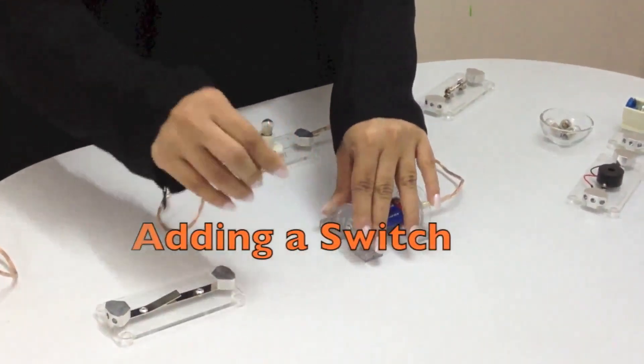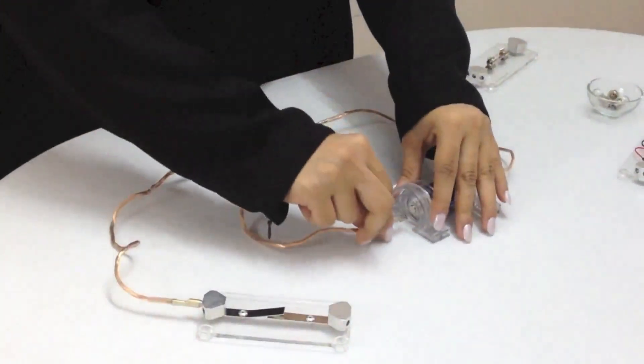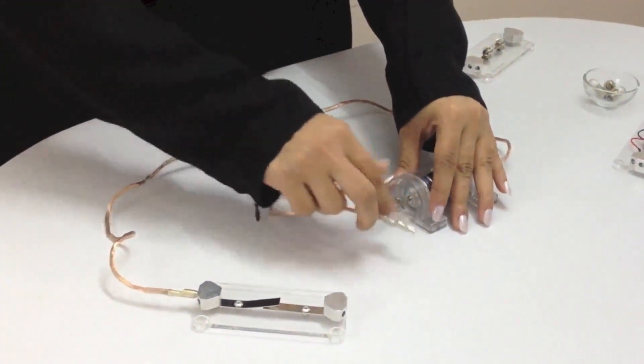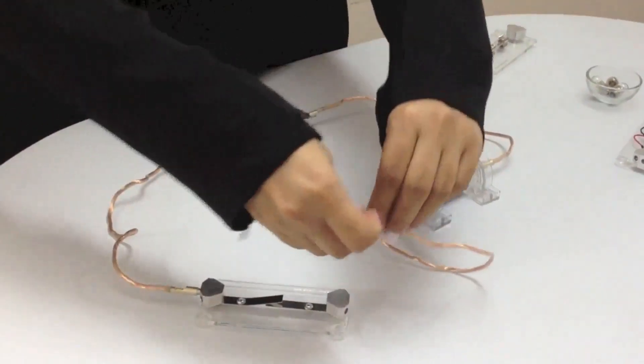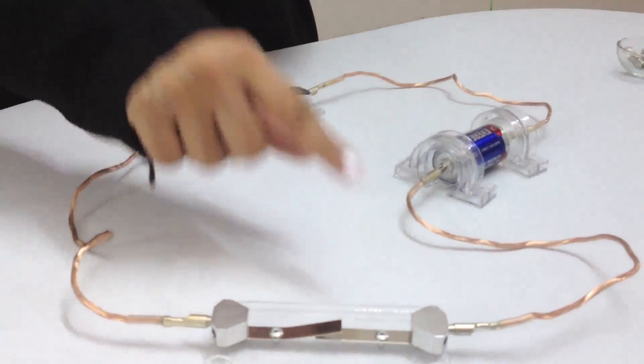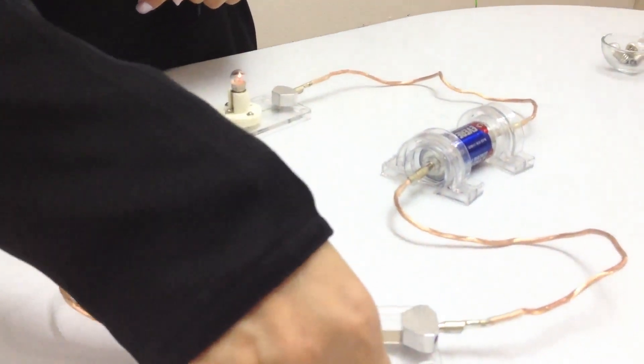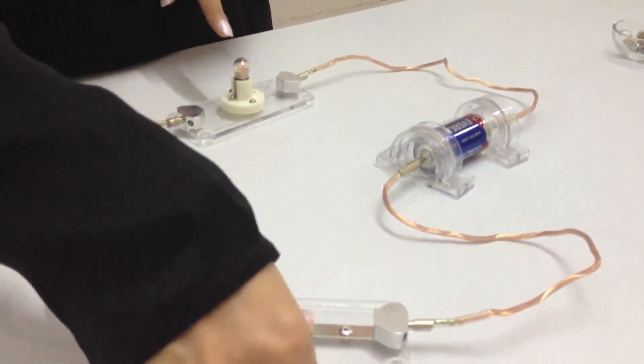I'm now going to add a switch to the circuit. I've connected the wires, but the circuit is not complete because the two plates of the switch are not connected to each other. When I apply pressure from the top, the plates connect and the bulb lights.